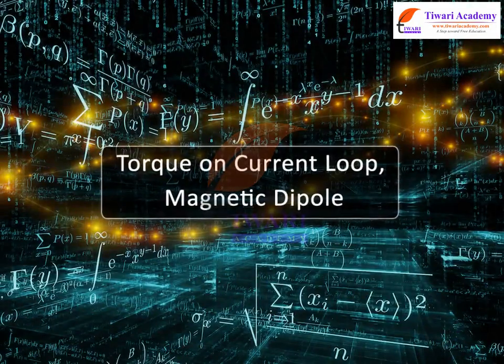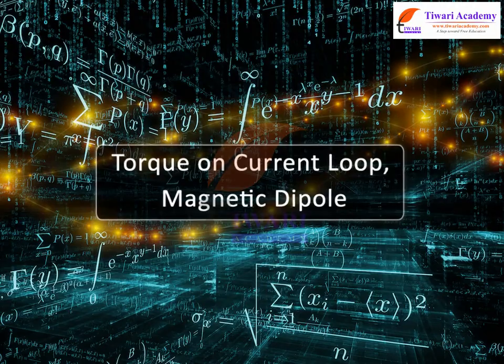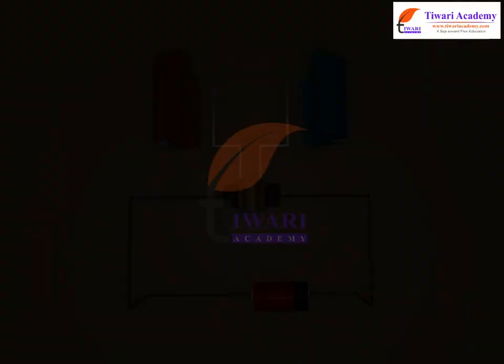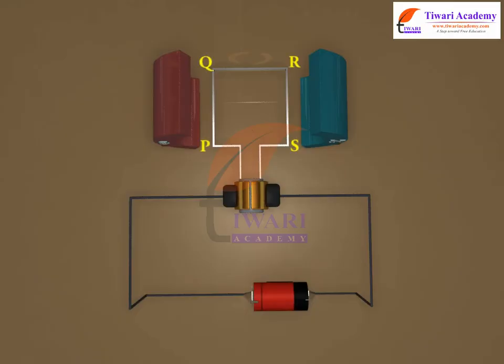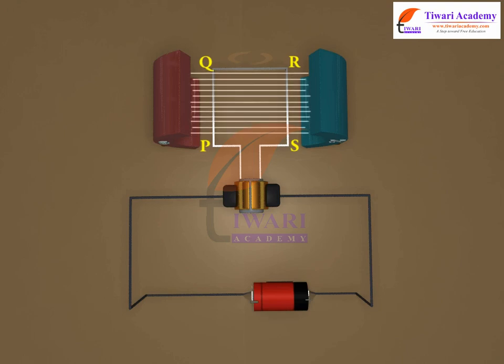Torque on Current Loop Magnetic Dipole. Consider the coil PQRS suspended in a uniform magnetic field of induction B vector. Let PQ equals RS equals L, and QR equals SP equals B.